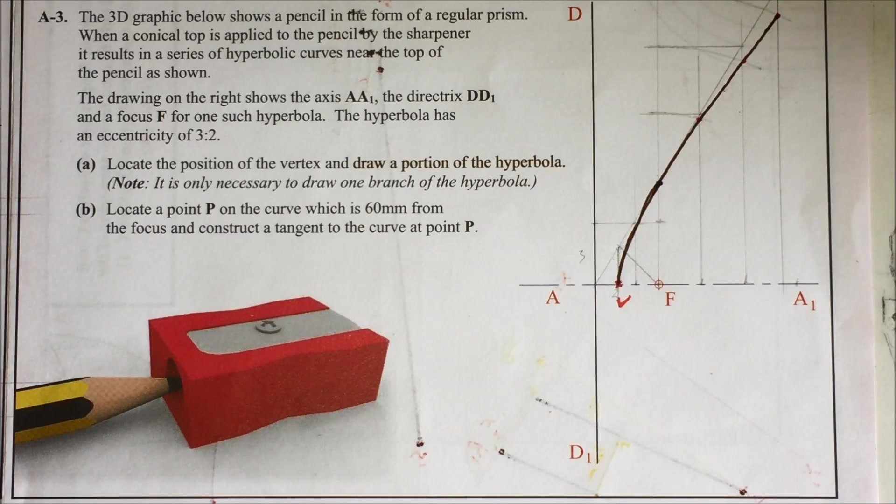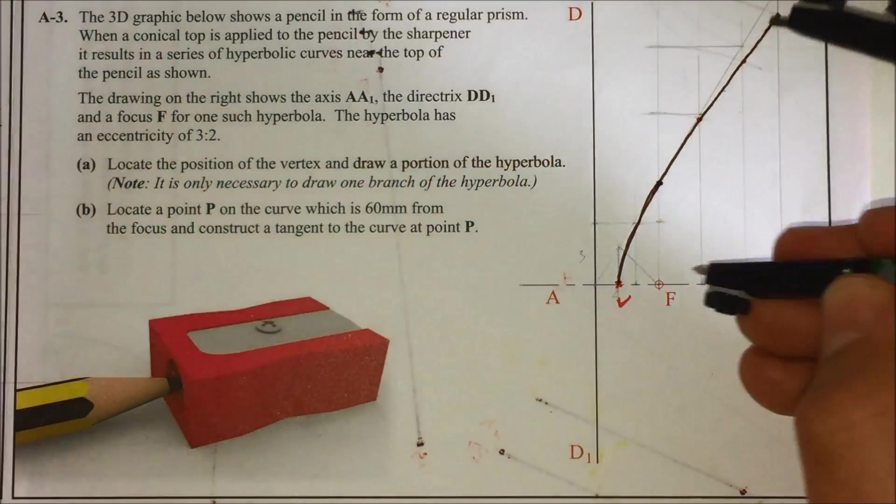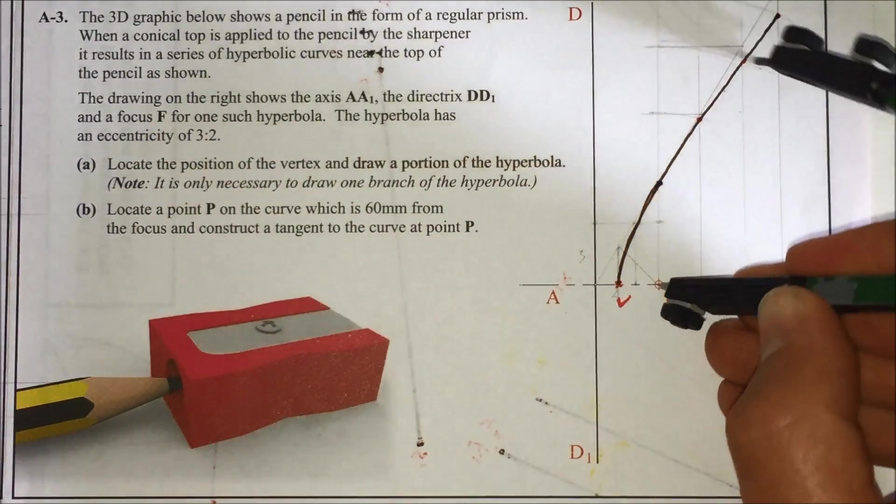Part B now: locate a point P on the curve which is 60mm from the focus and construct a tangent to the curve at point P. So let's get 60mm in our compass and draw an arc from the focal point to figure out where point P is.